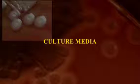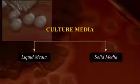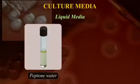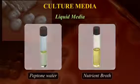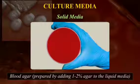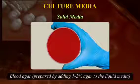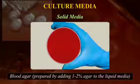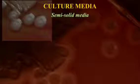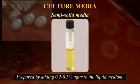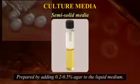Culture media can be broadly divided into two major groups: liquid media such as peptone water and nutrient broth, and solid media such as blood agar, which is prepared by adding 1-2% agar to the liquid media. Besides these two, semi-solid media are also used, which are prepared by adding 0.2-0.5% agar to the liquid medium.